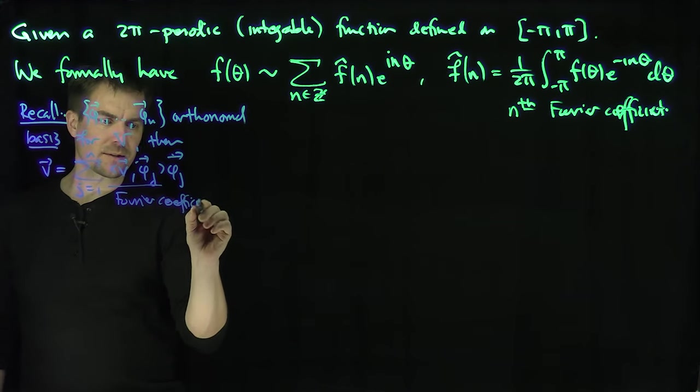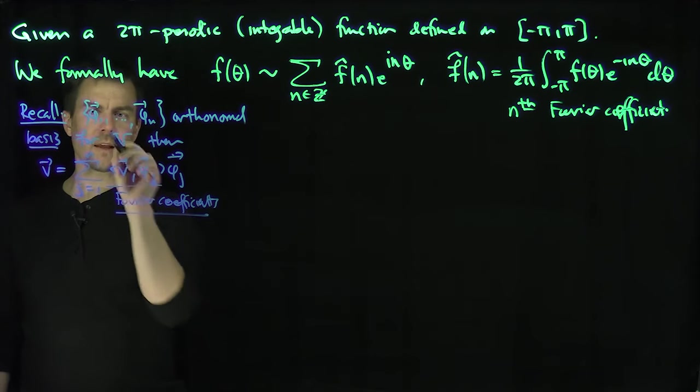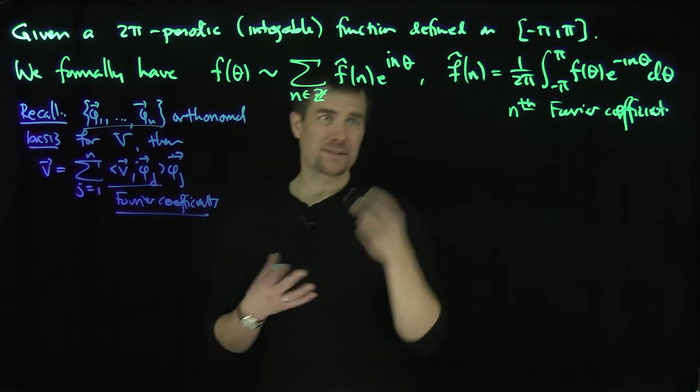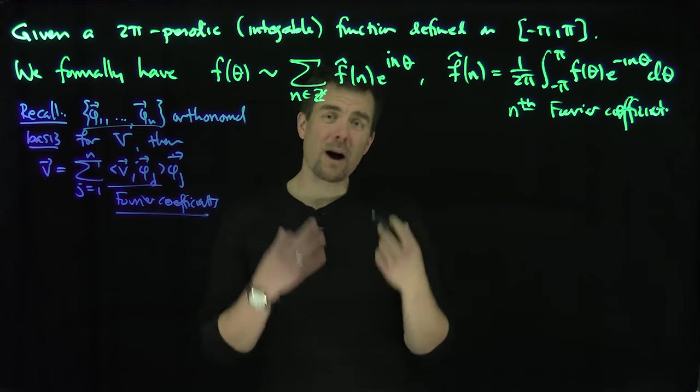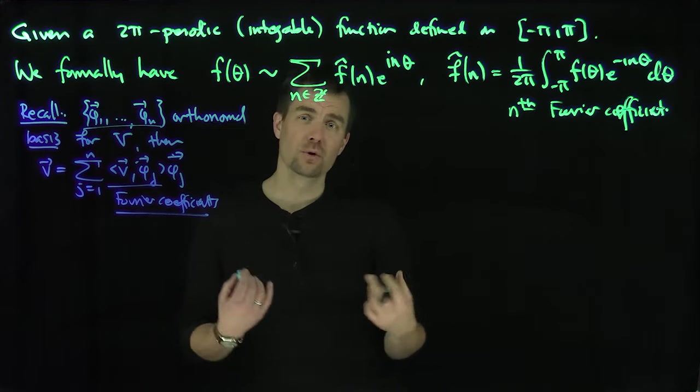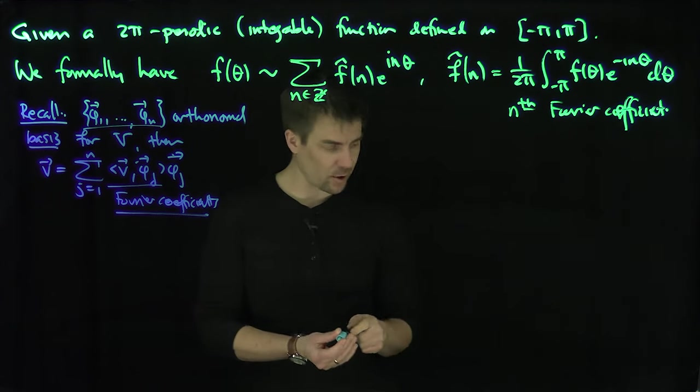Of course, since this is a finite basis, the finite means that this sum is going to converge no matter what. Now my basis is infinite. I'm summing over all of ℤ. There's a countable number of these things in the basis. So I don't know if this will converge or not. So we have to formulate a notion of convergence. That's where partial sums come in to help us.